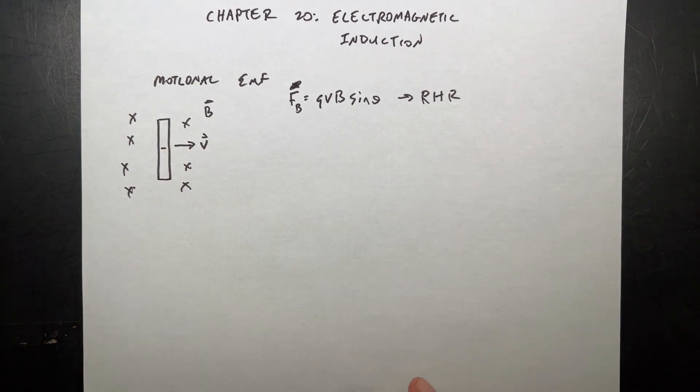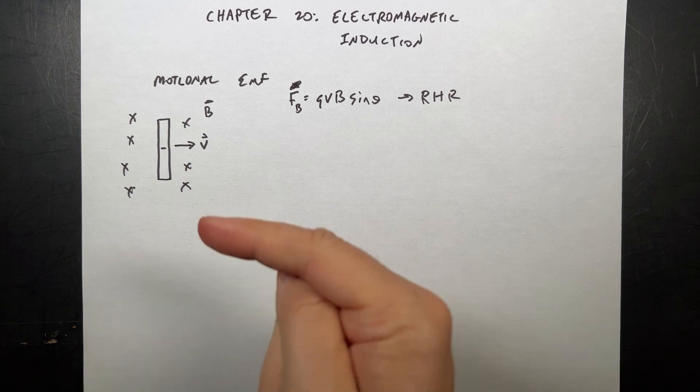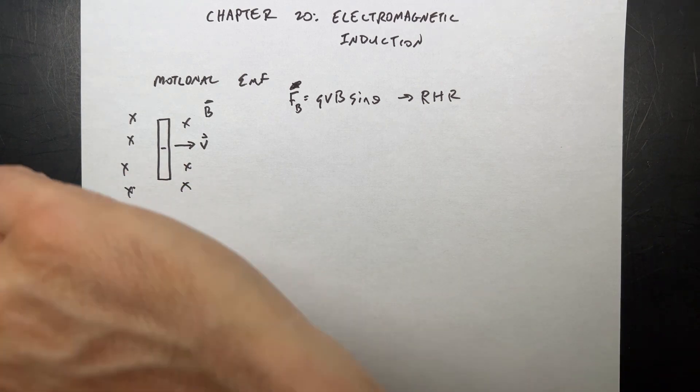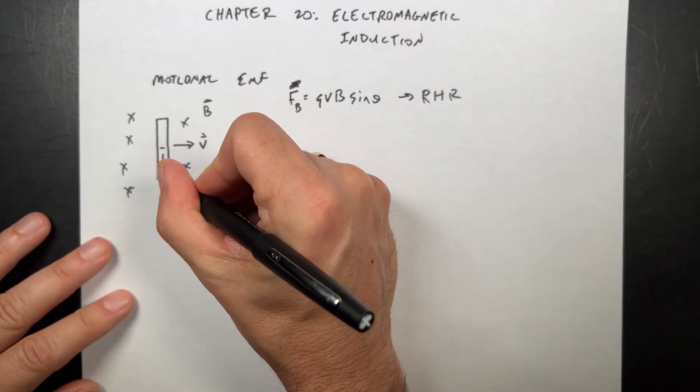that charge is going to experience a force. QV is this way, cross B, it's going to be a force this way. So this negative charge is going to get pushed down here.